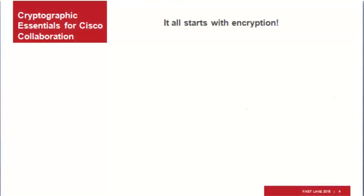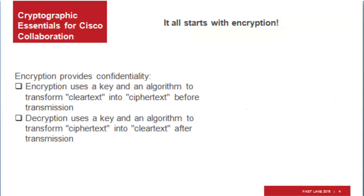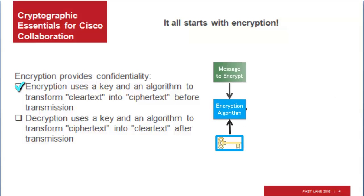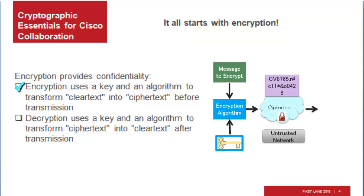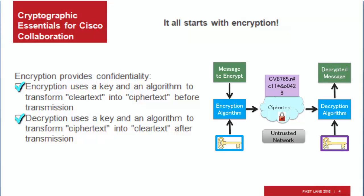It all starts with encryption. Encryption is the basis for all of our cryptographic services. Encryption provides confidentiality. It uses a key and an algorithm to transform clear text into ciphertext before transmission. Decryption uses a key and an algorithm to transform ciphertext into clear text after transmission. Encryption is also used to help provide the other cryptographic services: authentication, integrity, and non-repudiation.